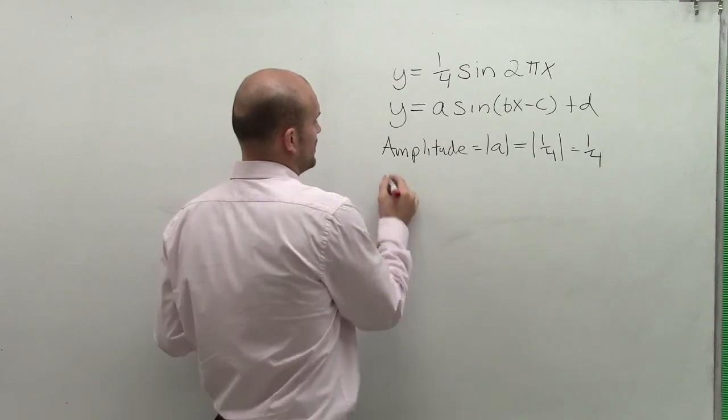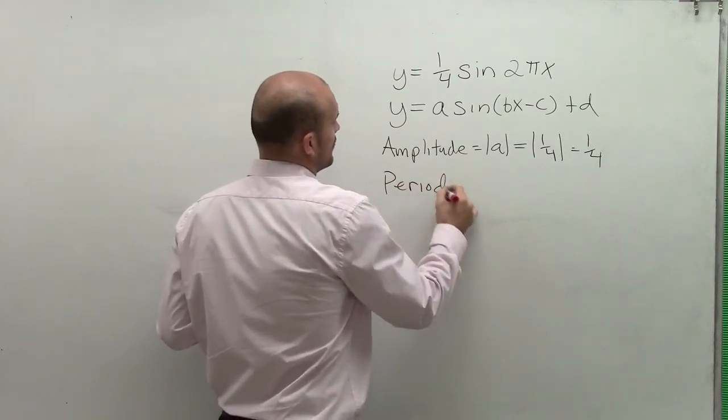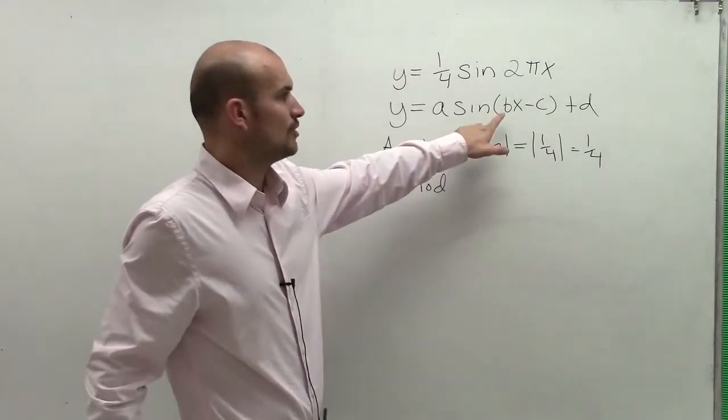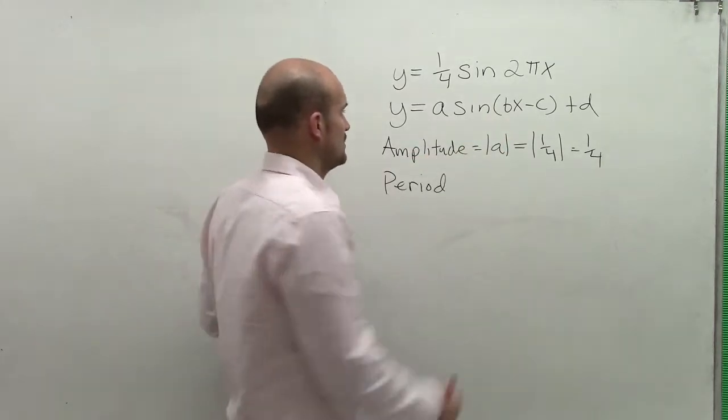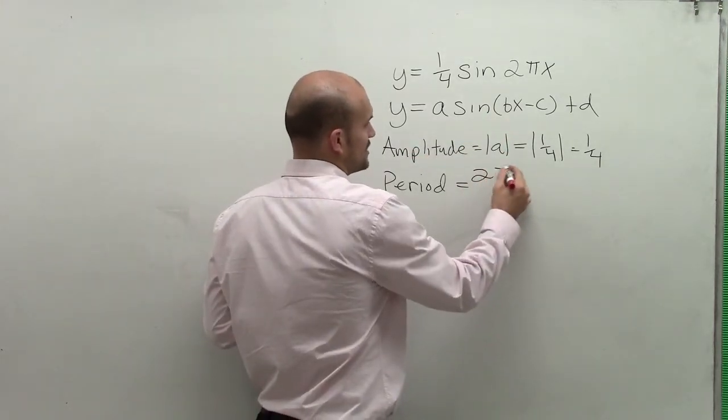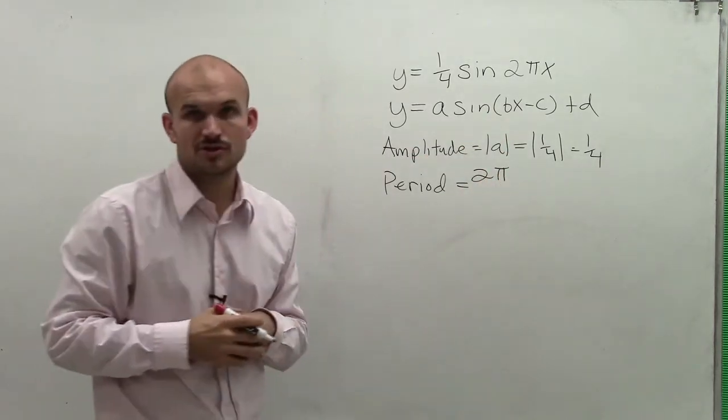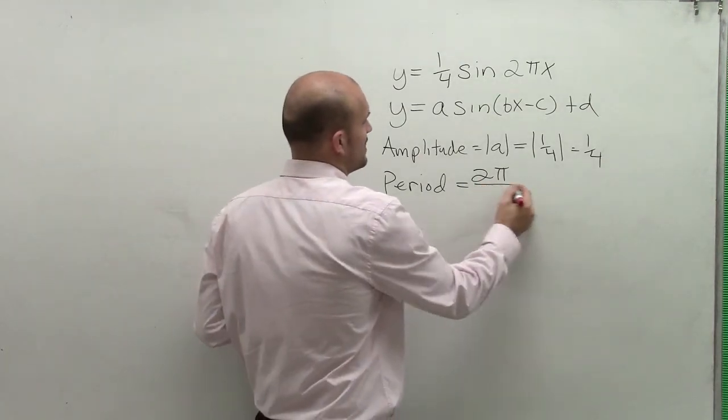Then let's take a look at the period. Now the period, what affected the period was going to be your b, your coefficient of your x. So what we did was we took the natural period of our parent graph, which was 2 pi, and we then divided it by b.